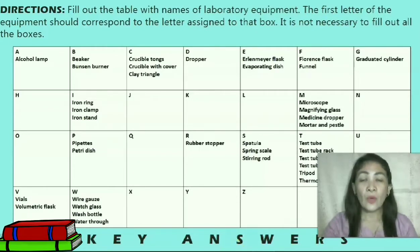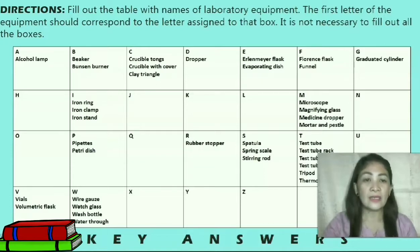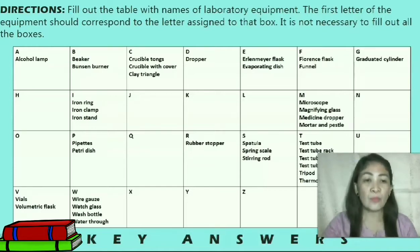Letter Q: No instrument assigned to this letter. Letter R: Rubber stopper. Letter S: Spatula, spring scale, stirring rod. Letter T: Test tube, test tube rack, test tube brush, test tube holder, tripod, thermometer. Letter U: No instrument assigned to this letter. Letter V: Vials.